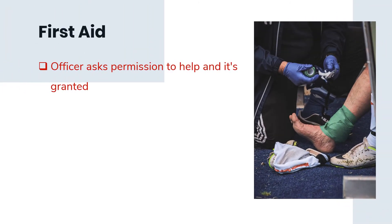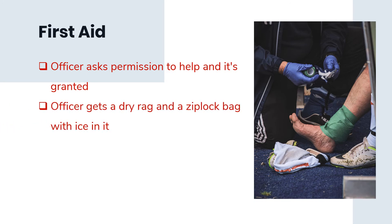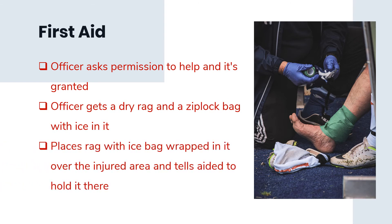First Aid: the officer asks permission to help and it is granted. It's important that since the person is conscious, they are asked if it's okay for the officer to administer first aid. The officer gets a dry rag and a zip-lock bag with ice, places the rag with the ice bag wrapped in it over the injured area, and tells the aided to hold it there. Using basic first aid training, the officer follows the steps for helping alleviate pain and swelling to the injured and sprained area.